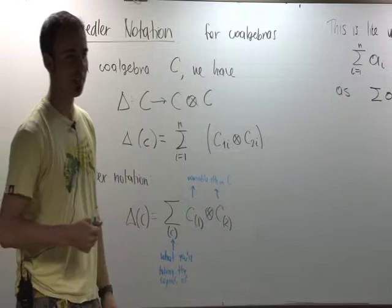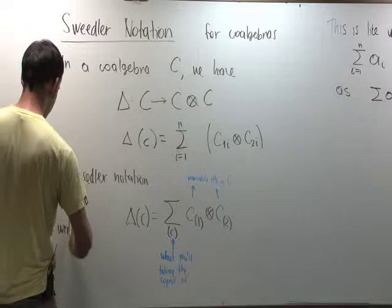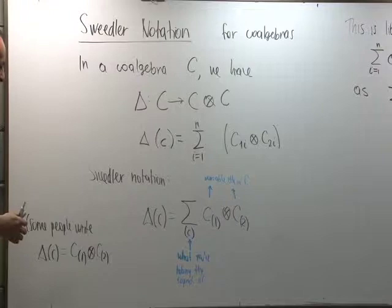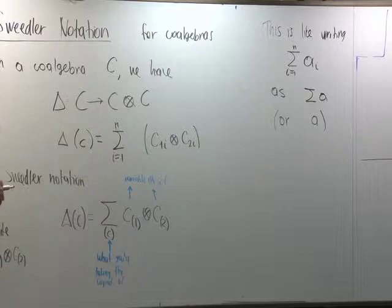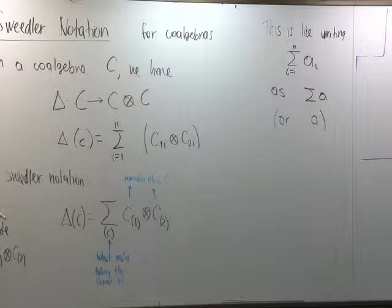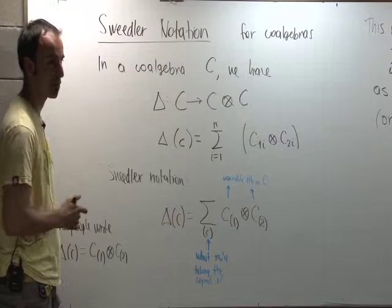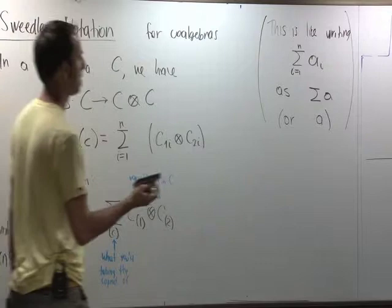Some people take it to the next level and write delta(c) simply as c_1 tensor c_2 without even writing the summation sign, with the understanding that there's always a sum. It's a very simplified notation, but it takes a little time to get used to. It saves you a lot of time, energy, ink, and paper. But you have to be careful using this notation. That is Sweedler notation.